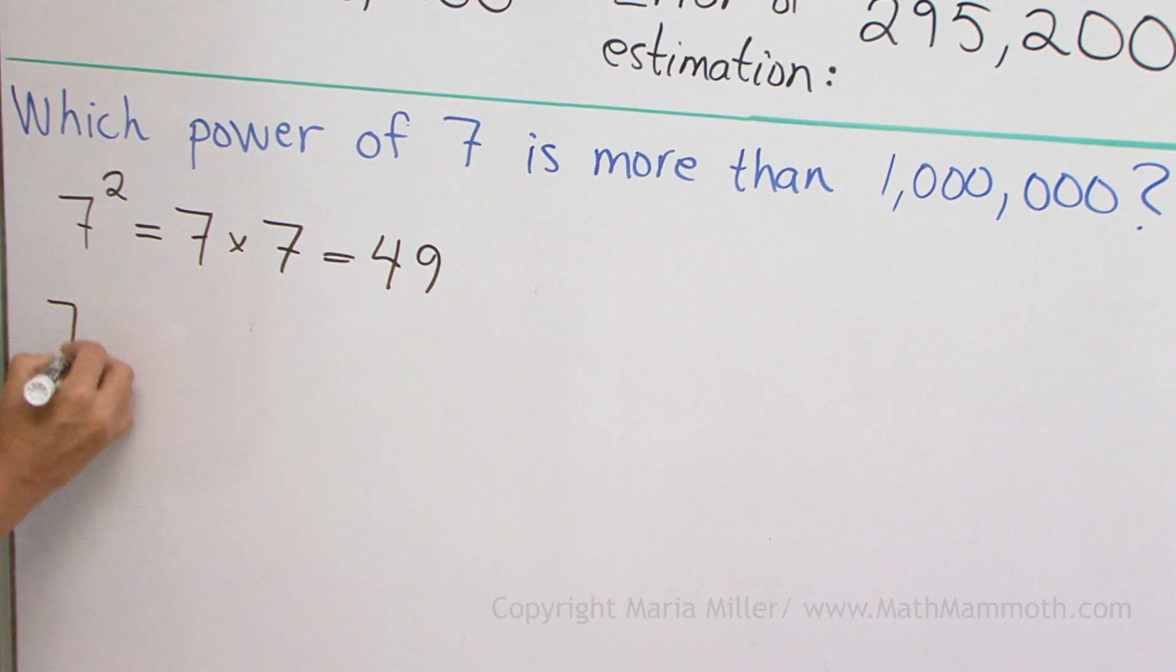Now the next power is seven to the third power. This is a power of seven, seven to the third power. And then we would have seven to the fourth power, seven to the fifth power, and so on.